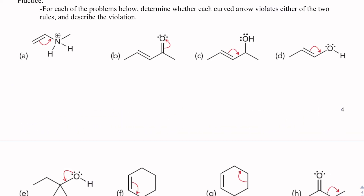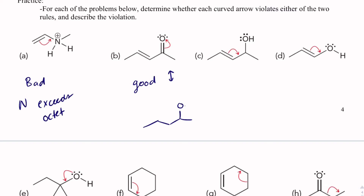Looking at problem examples: this arrow is bad — nitrogen already has four bonds and the arrow is pointing at the bond, so N would exceed an octet; we can't have five bonds. This next one looks good — we're just putting another lone pair on oxygen, which ends up with three lone pairs and one bond. Oxygen can have one bond and three lone pairs, so that's totally all right.